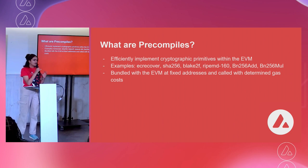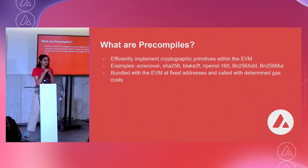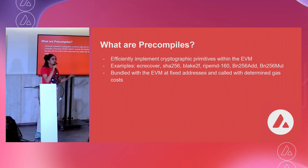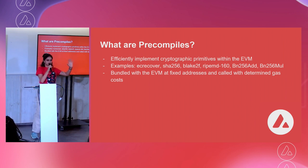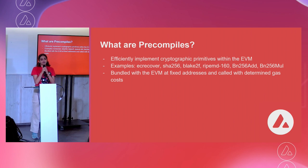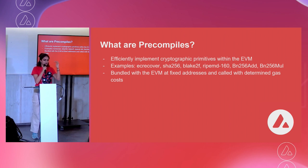Now we're going to be talking about precompiles. What are precompiles? Precompiles are shortcuts within the EVM that execute the function in the native language of the EVM rather than a smart contract. Normally, you deploy a contract, and the contract address is associated with the compiled smart contract — the bytecode. When you call a smart contract function, the EVM interpreter finds the correct bytecode and executes it. That's how normal smart contracts work.